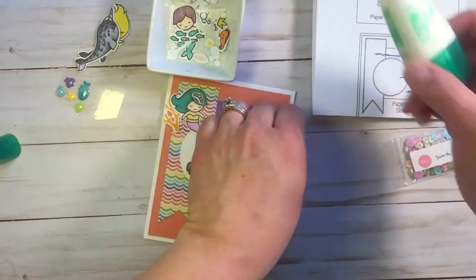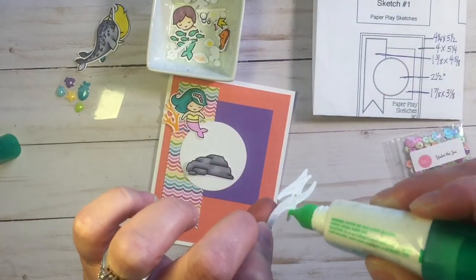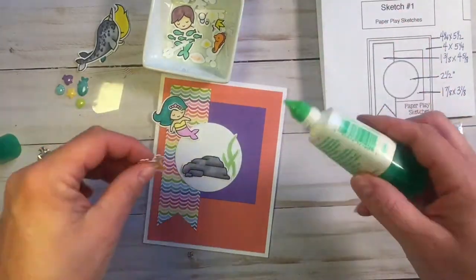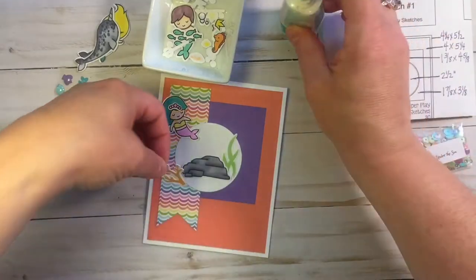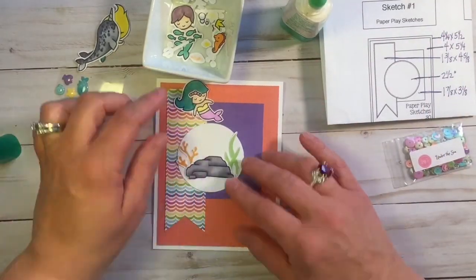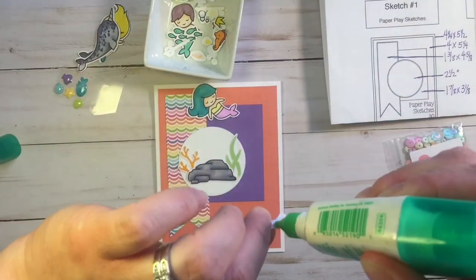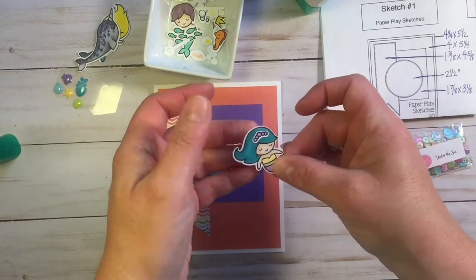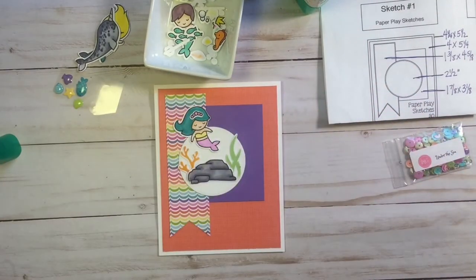But for now, I'll just show you the basic card. How you can just follow a sketch with the basic supplies. You don't need anything special. You don't need dies and special markers. And I certainly don't color any special. I didn't do any shading or highlighting. I just simply color book colored.